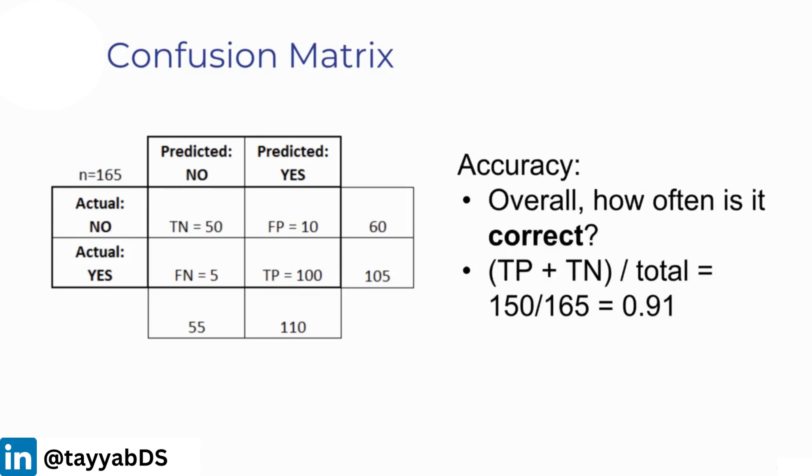If we're trying to answer a question like, what was the accuracy of this test, we ask ourselves how often is it correct? For accuracy, it's equal to true positives plus true negatives divided by the total, essentially asking how many did I classify correctly over all my examples. In this case, we get 150 divided by the total number, which was 165, and that means our test was 91% accurate.